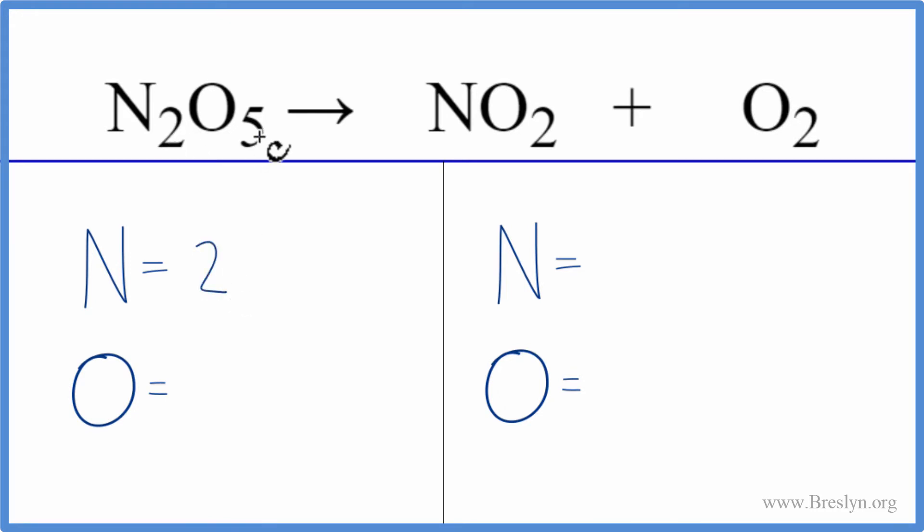We have two nitrogens and five oxygens. On the product side, we have one nitrogen and two oxygens. And we have these two oxygens here.